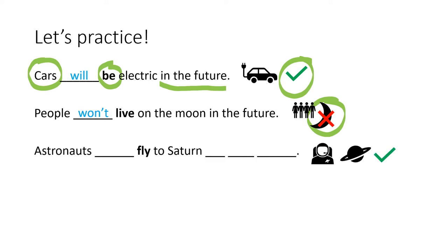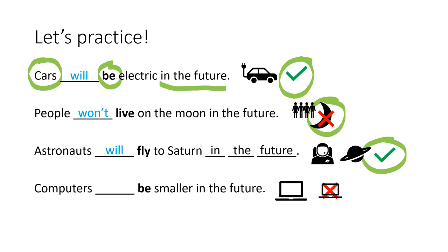Next, astronauts fly to Saturn. So here we've got a tick. We are missing will. Astronauts will fly to Saturn. What's the last part of the sentence? Aha, in the future. Good.